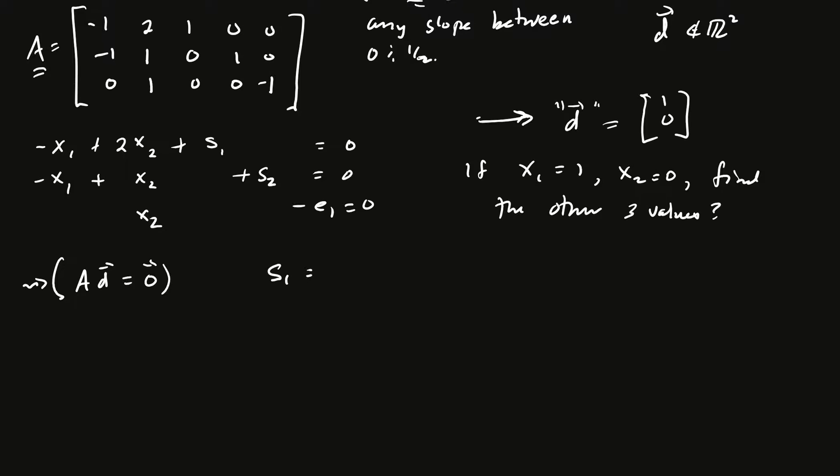S1 is going to be x1 minus 2x2. So, in this case, we're just going to have 1 minus 0, which is 1. And then S2 is coming next, is going to be x1 minus x2, and that's equal to 1 minus 0 equals 1. E1 is the last one. So, E1 is going to be x2, which is 0. So, we have 1, 1, 0 there. And so, now we have the full vector D is going to be 1, 0, 1, 1, 0. That's in R5.